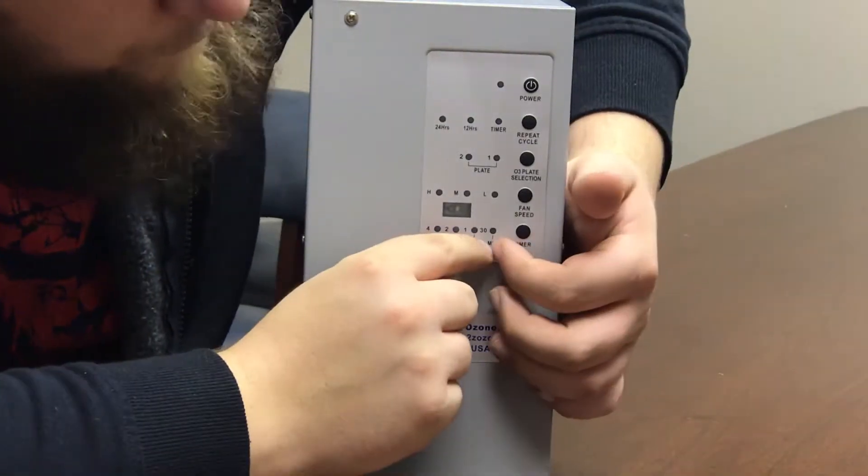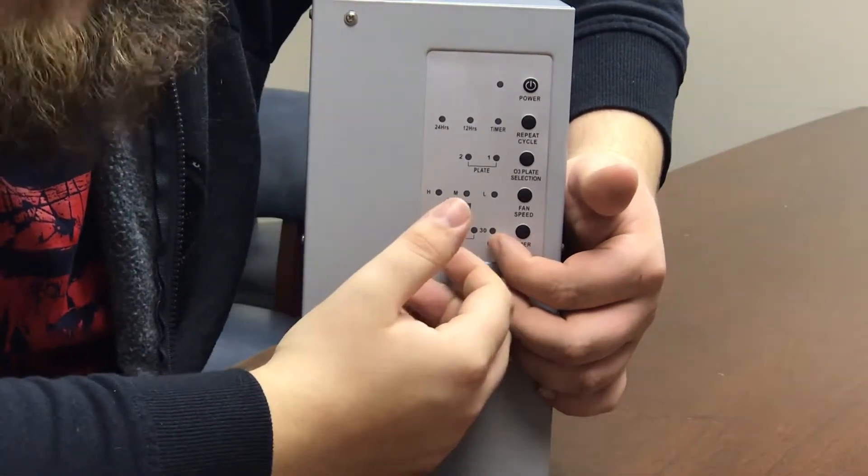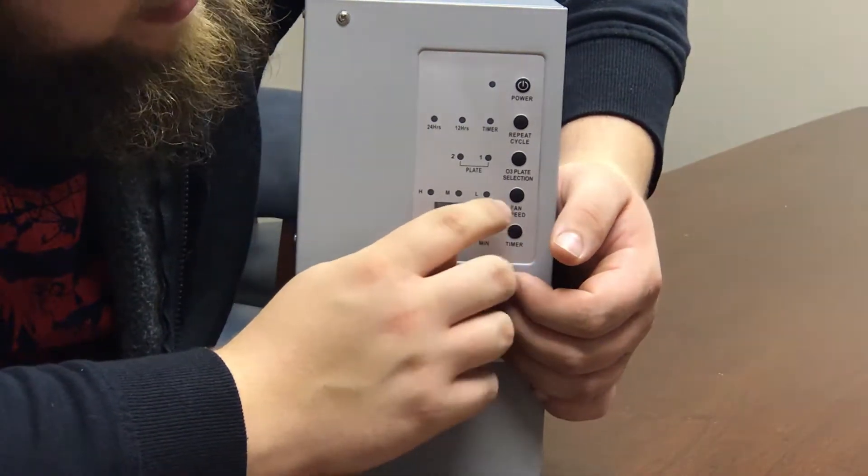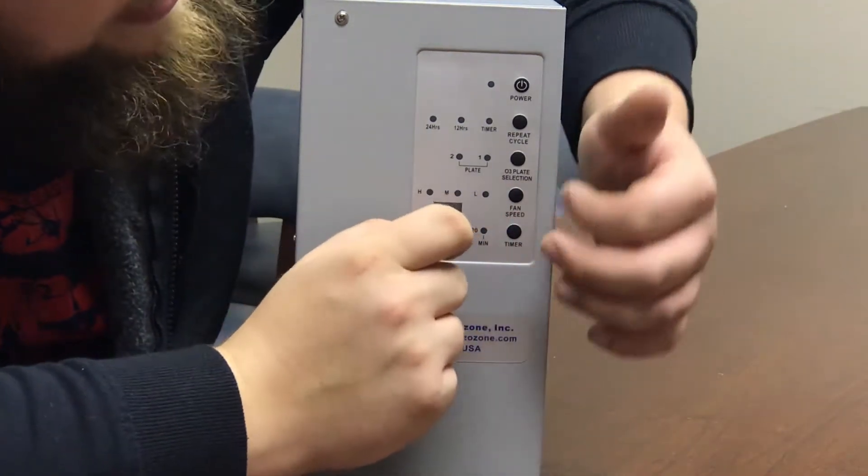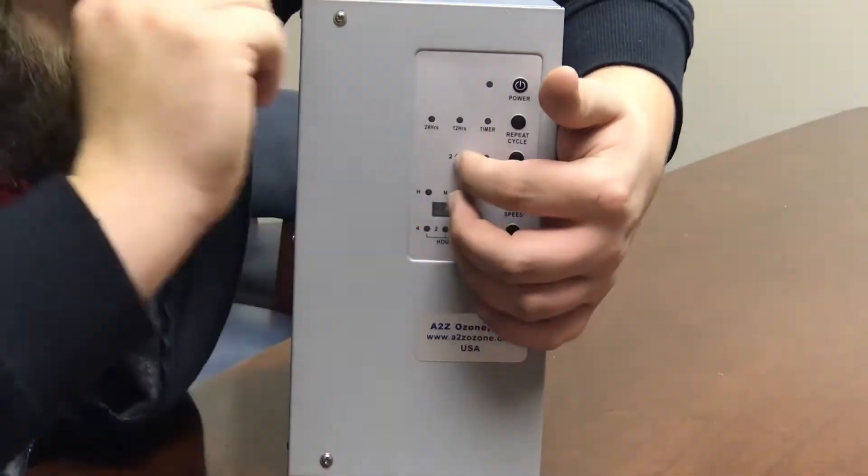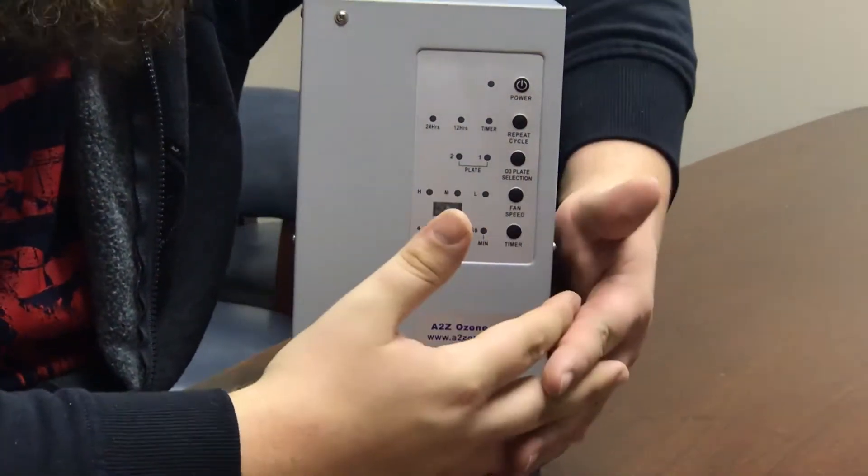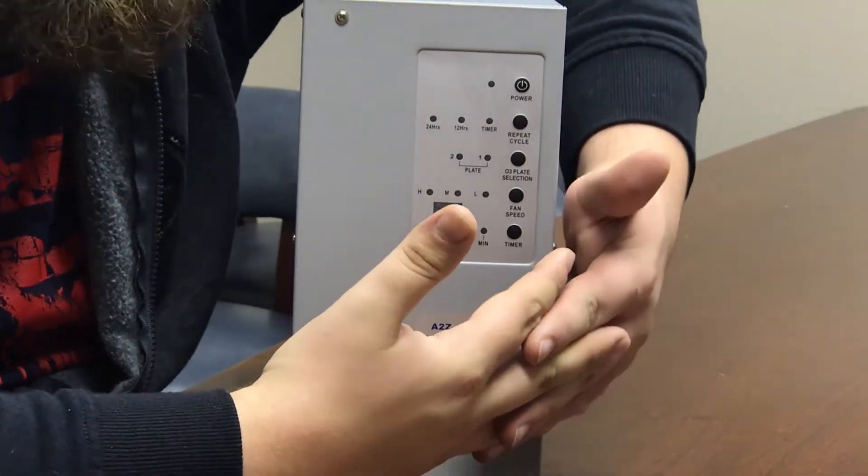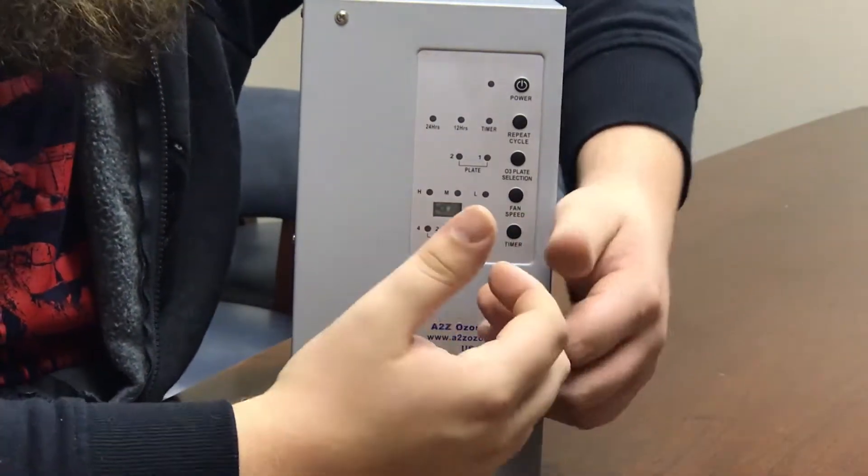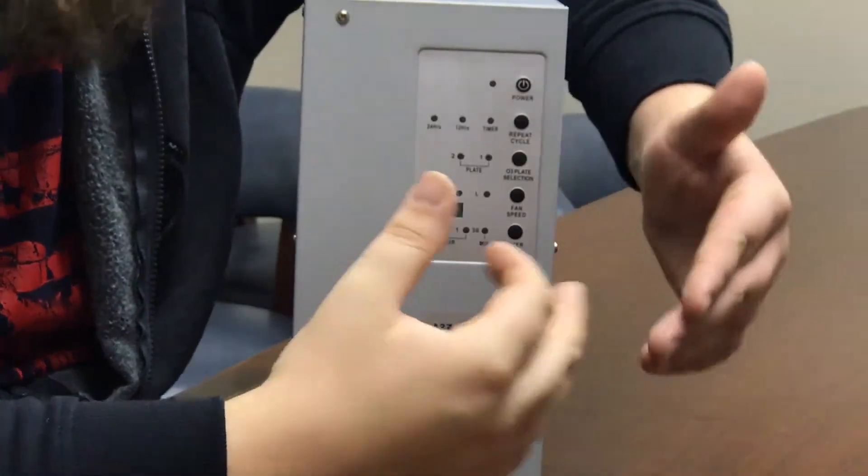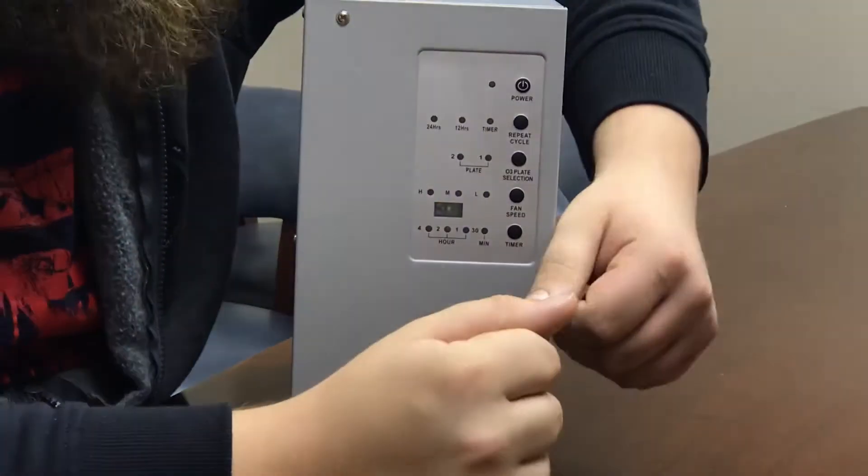You can set your timer to run for 30 minutes or an hour, depending on the size of your house. Leave it on the high setting. You can select one or two plates depending upon how much ozone you actually want—you might just want that nice little fresh smell or a little bit more.